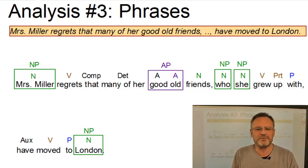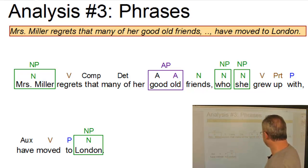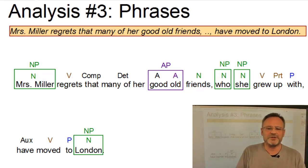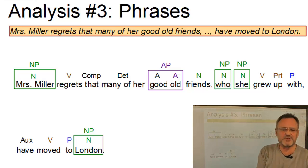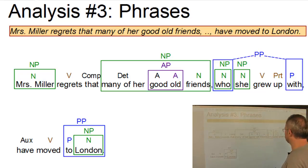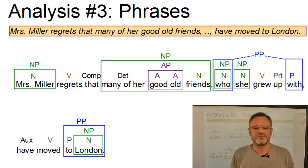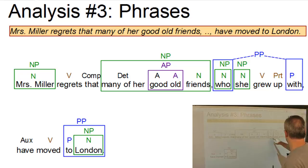They have neither any pre nor any post modification slot. The adjectival phrase good old is introduced by a modifying adjective and exhibits the head on the right-hand side. So old is the head and good is a modifier. On the next level, the adjectival phrase is nested within a noun phrase, and the noun phrase who now serves as the modifier of with.